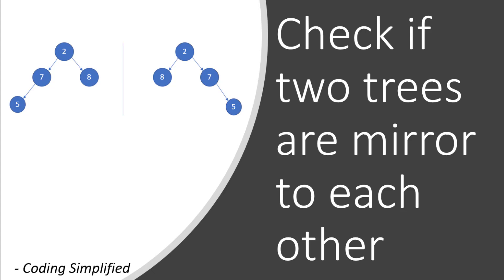Mirror to each other means, as you can see, in this tree we have 2, 7, 5 on the left side and 8 on the right side. If you place a mirror here, it will reflect this one — 8 will come to the left and 7 and 5 will appear to the right. So in this case, both are mirrored to each other. That's what we need to find out.